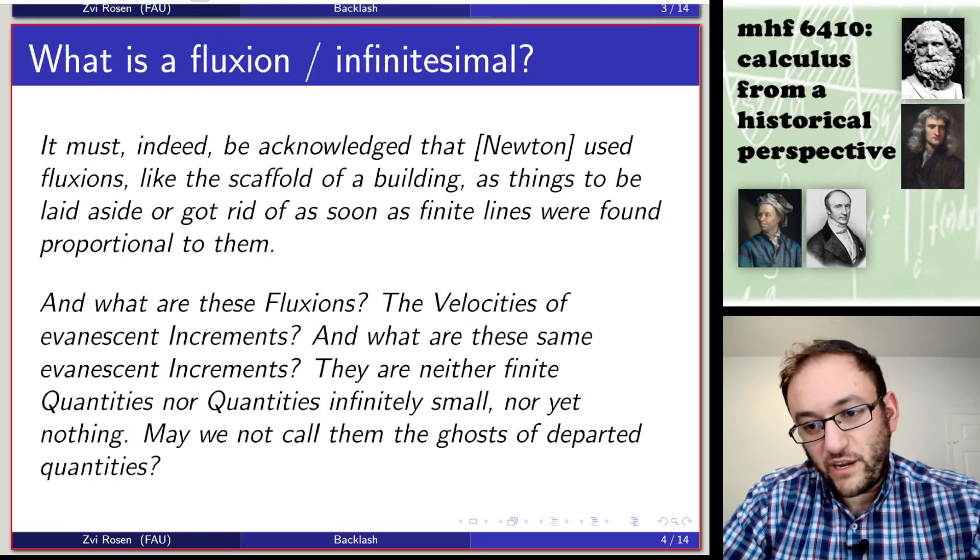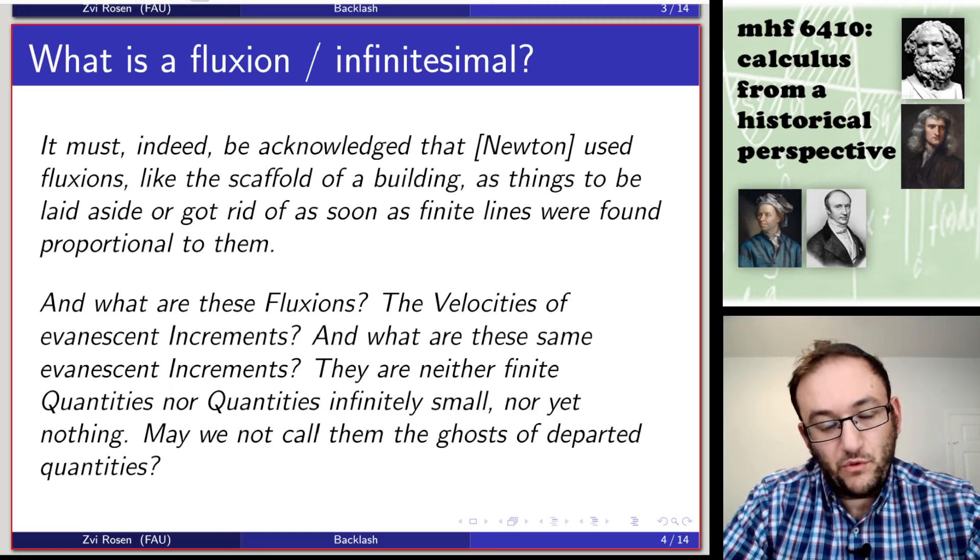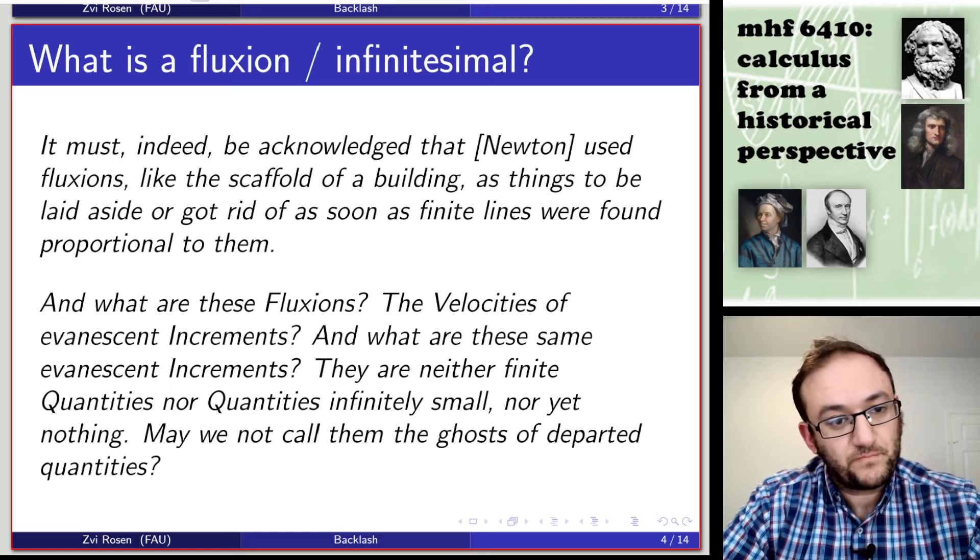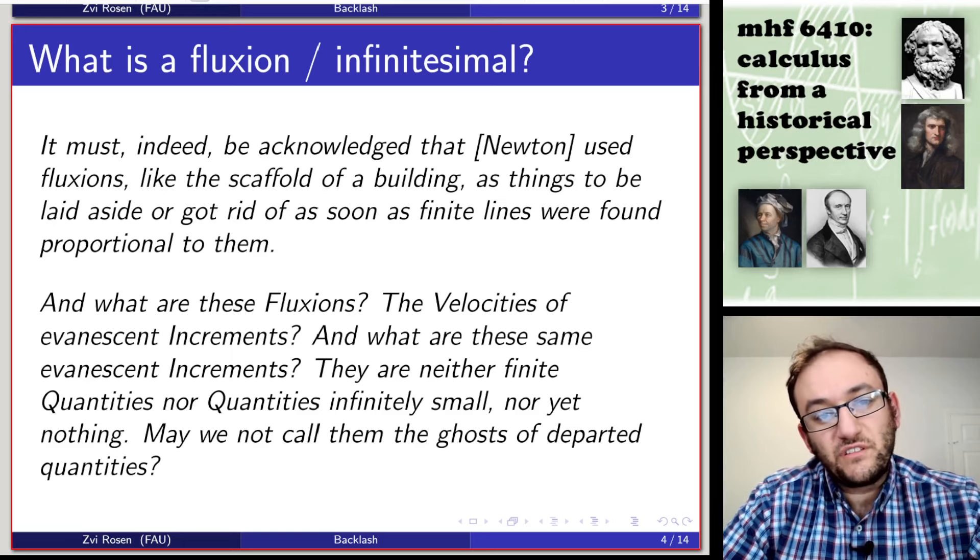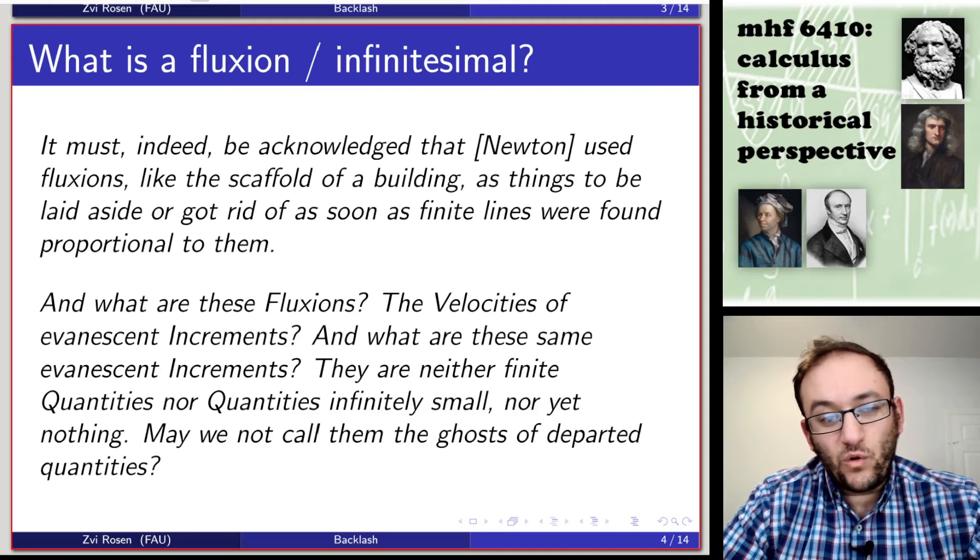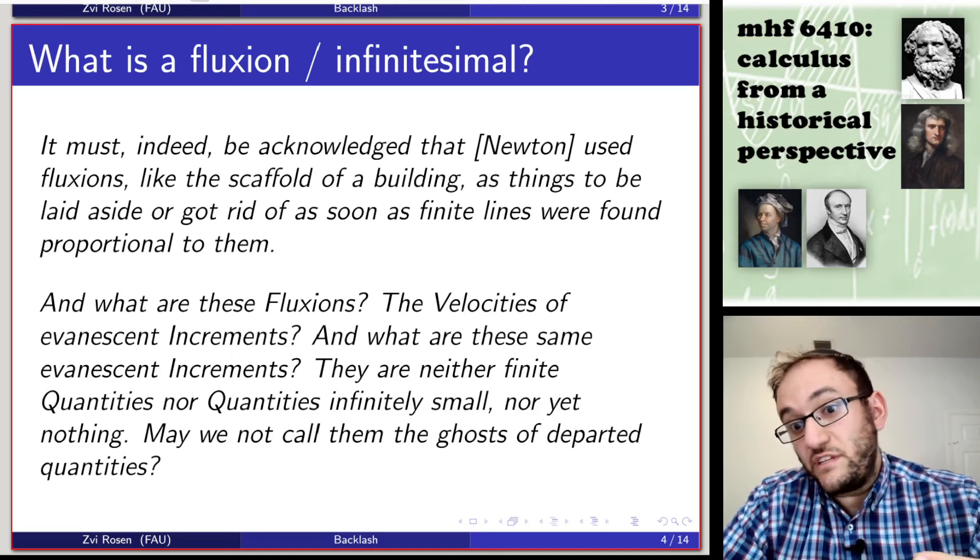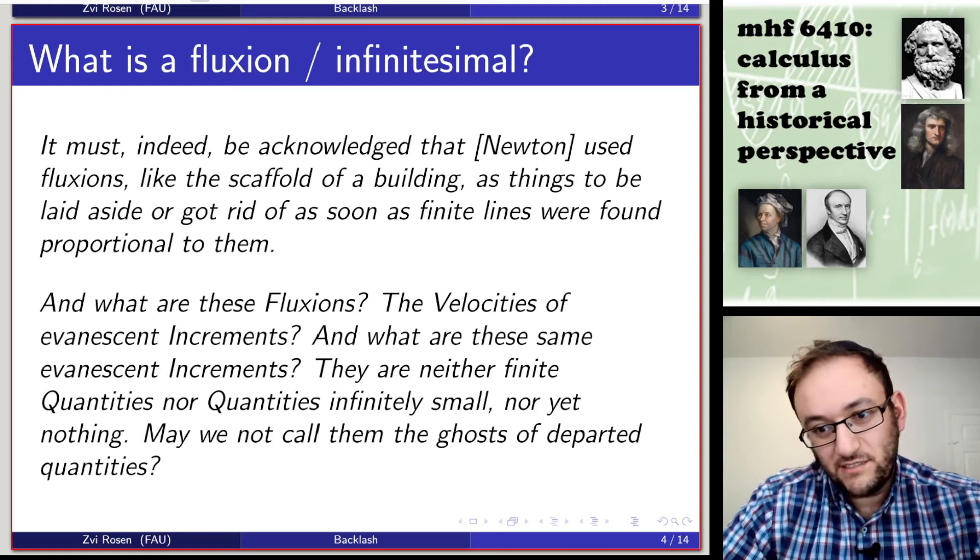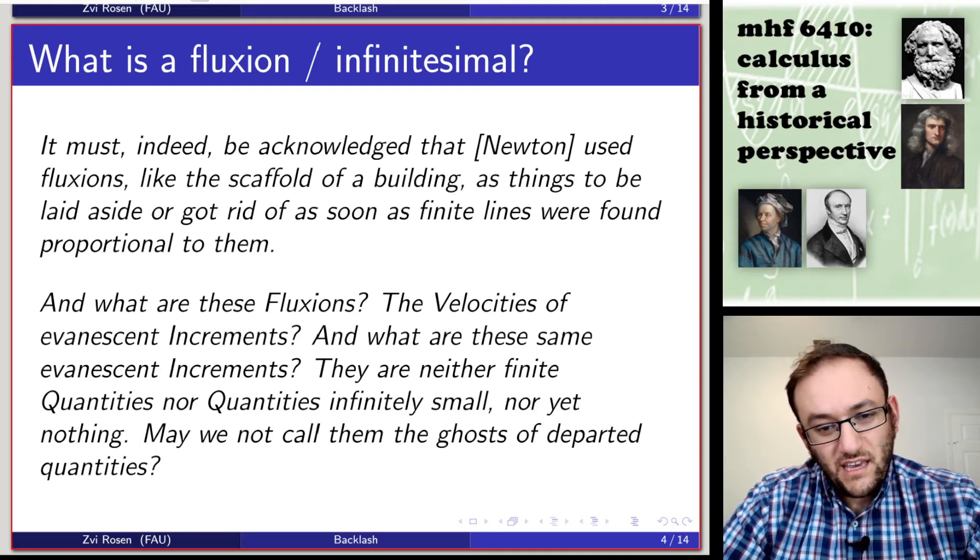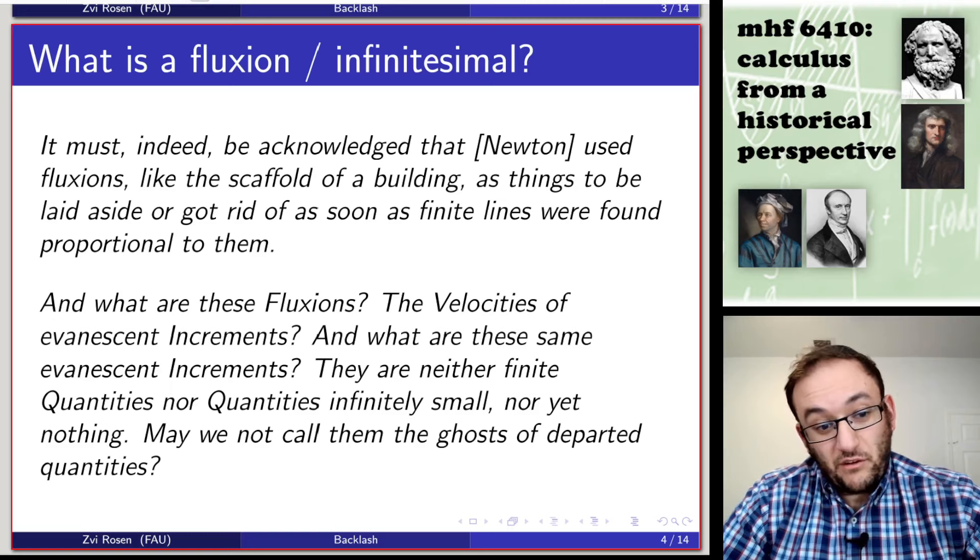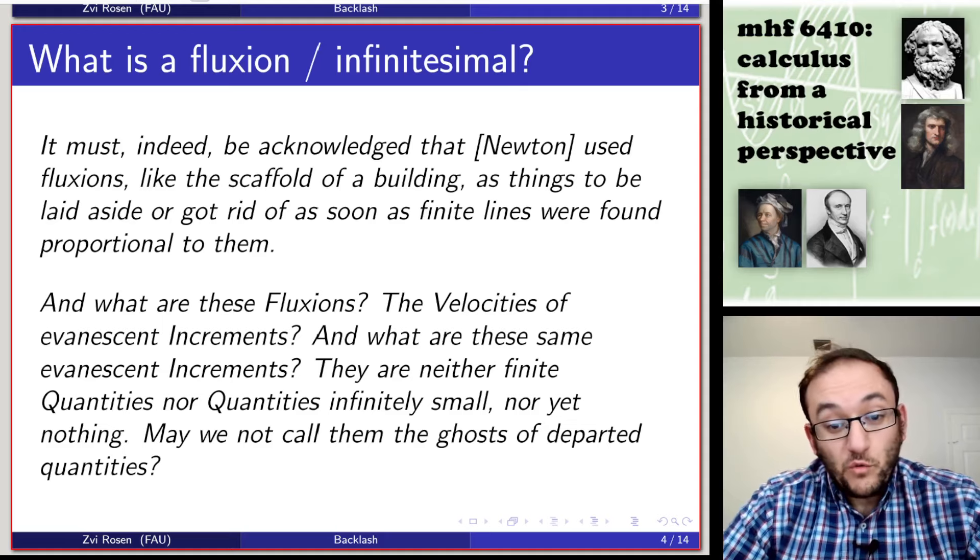The first is: everyone's very excited about calculus, but what really is a fluxion in the language of Newton or an infinitesimal in the language of Leibniz? So he writes, it must indeed be acknowledged that Newton used fluxions like the scaffold of a building as things to be laid aside or got rid of as soon as finite lines were found proportional to them. And what are these fluxions? The velocities of evanescent increments? And what are these same evanescent increments? They are neither finite quantities, nor quantities infinitely small, nor yet nothing. May we not call them the ghosts of departed quantities?